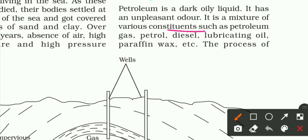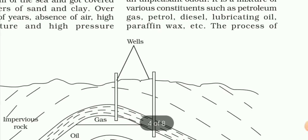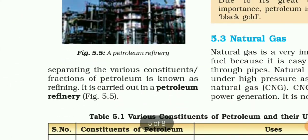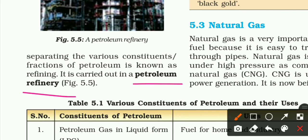Petroleum is a mixture of various constituents such as petroleum gas, petrol, diesel, lubricating oil, paraffin wax, et cetera. The process of separating the various constituent fractions of petroleum is known as refining. Refining hota kiya hai? Woh process jis mein petroleum mein se unke useful products ko nikala jata hai, yani ki refine kiya jata hai. It is carried out in a petroleum refinery.